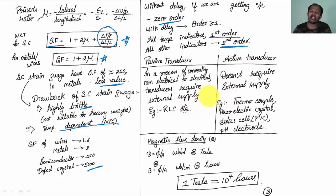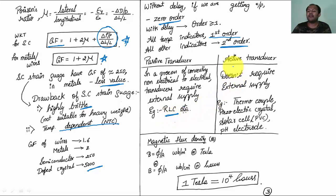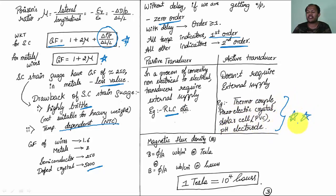Passive transducers require an external power supply in the process of converting non-electrical to electrical quantity — examples include resistive, inductive, and capacitive transducers. Active transducers do not use an external power supply — examples include thermocouple, piezoelectric crystal, solar cell (PV cell), and pH electrode. There are only 4 active transducers; the rest are passive. In UGC NET exams they may ask you to identify the odd one out or identify the active transducer from a list.